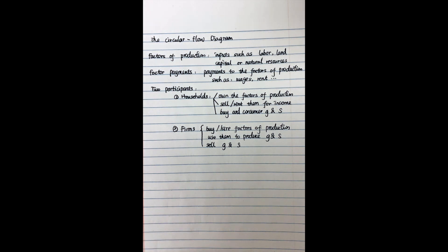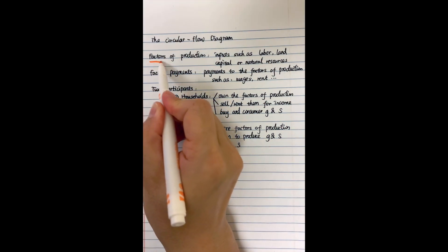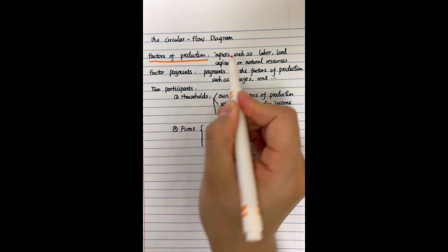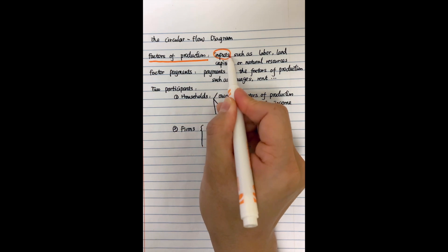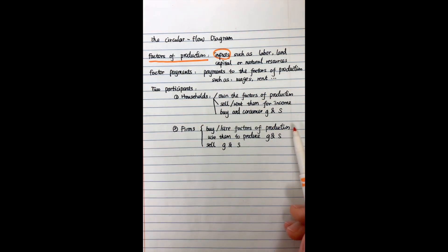Before we talk about the circular flow diagram, there are two concepts we need to understand. The first is factors of production. Factors of production means some inputs, such as labor, capital, and natural resources or land.